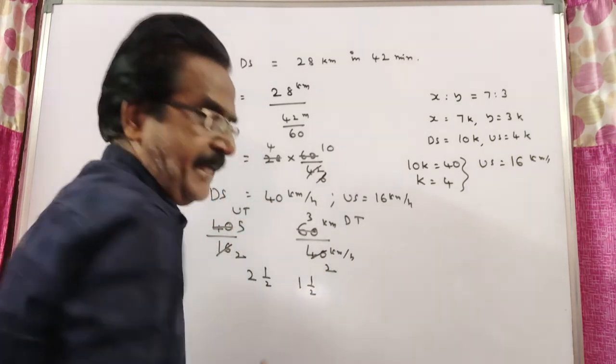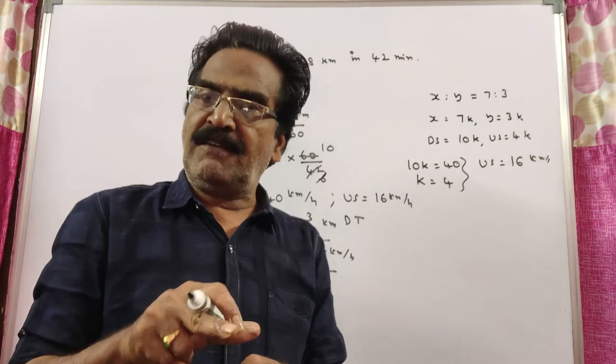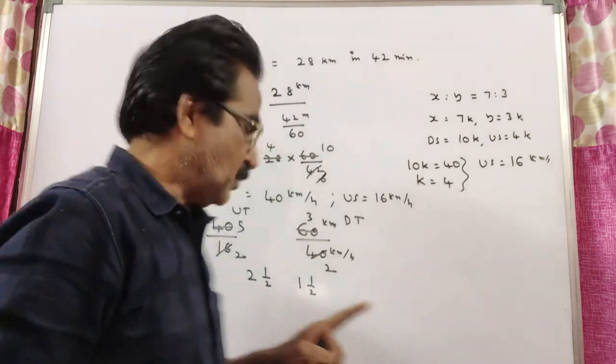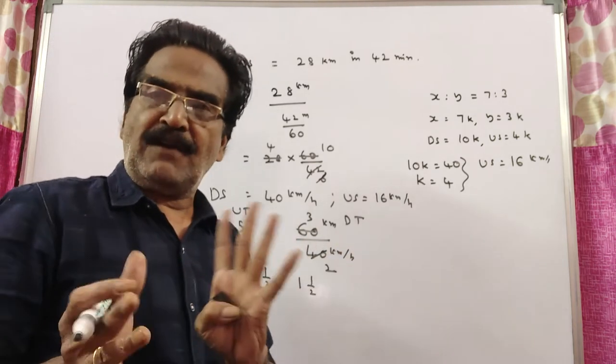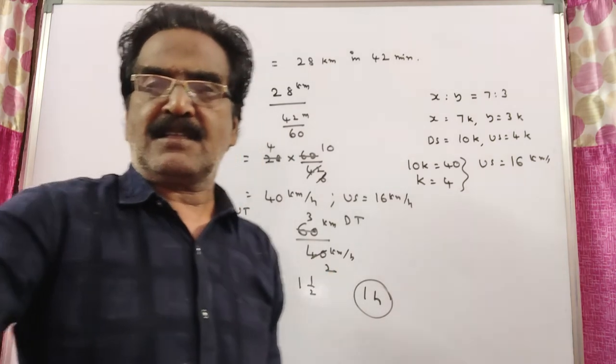It takes 2 and a half hours to travel upstream. It takes 1 and a half hours to travel downstream. So the time difference between 2 and a half and 1 and a half is 1 hour. 1 hour is your answer.